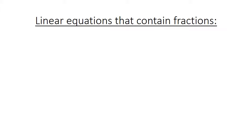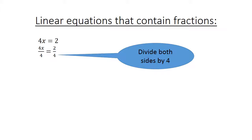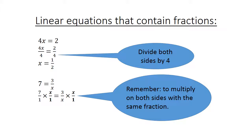Linear Equations that contain fractions. Example: 4x equals 2. We divide both sides by 4: 4x divided by 4 equals 2 over 4, so x equals 1 over 2. Next example: 7 equals 3 over x. We multiply both sides by x over 1, giving 7x equals 3, and x equals 3 over 7.